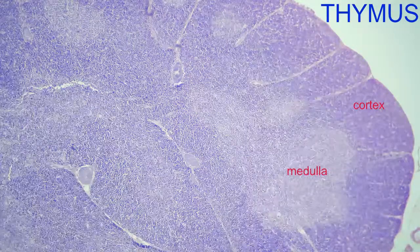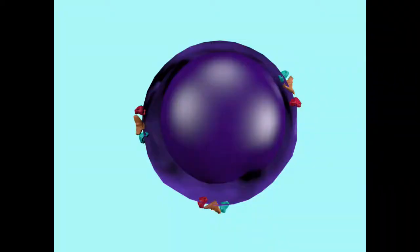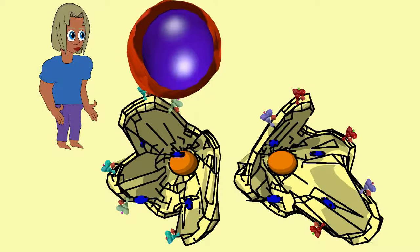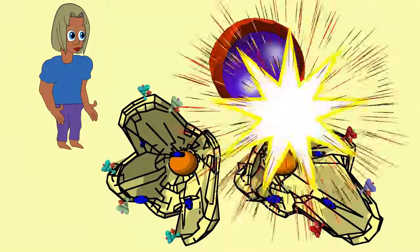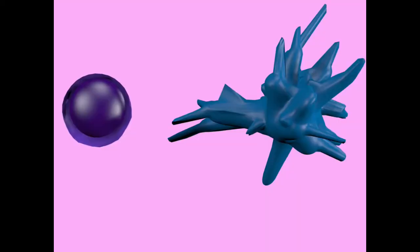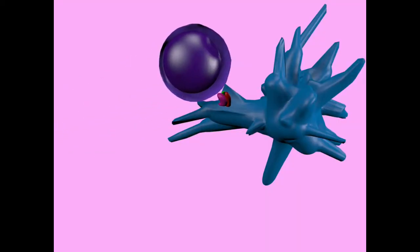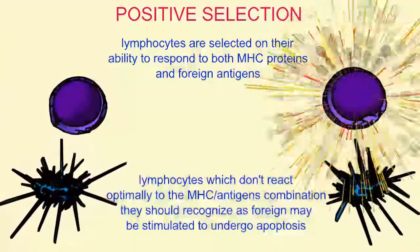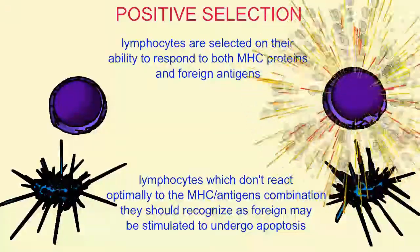After their survival, double positive thymocytes move to the border between the cortex and the medulla of the thymus, or into the medulla, where they are selected for their ability to bind better with MHC1 proteins, as would befit cytotoxic T lymphocytes, or MHC2 proteins, as would befit T helper cells. Thus, they are stimulated to specialize to produce only the CD4 or CD8 receptors in positive selection.